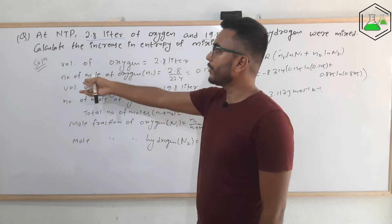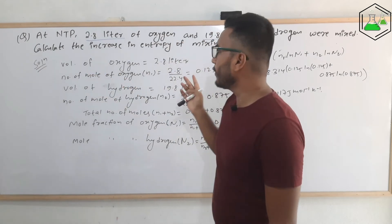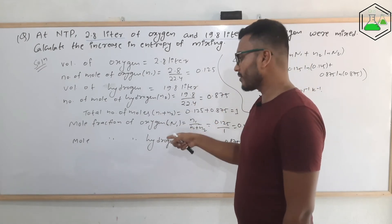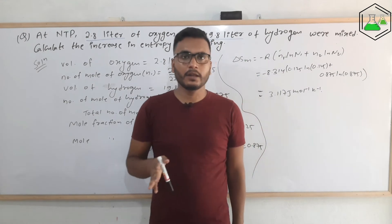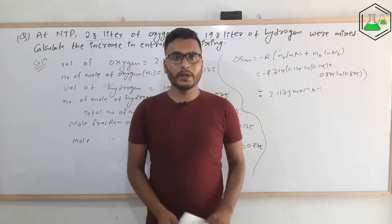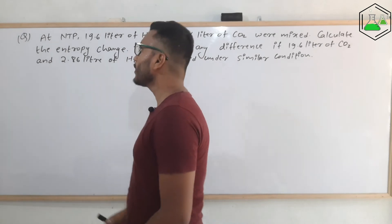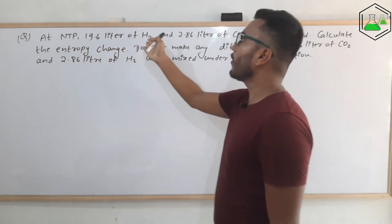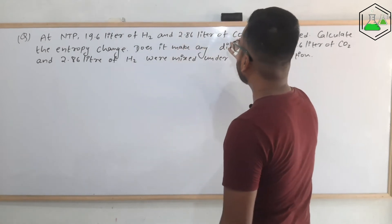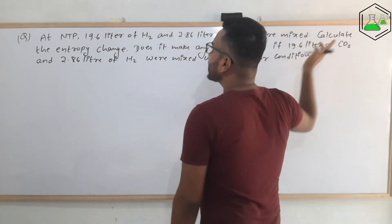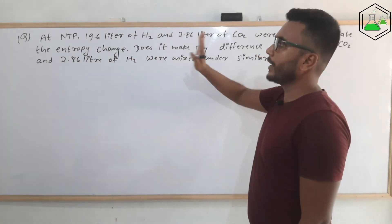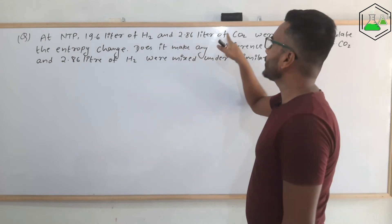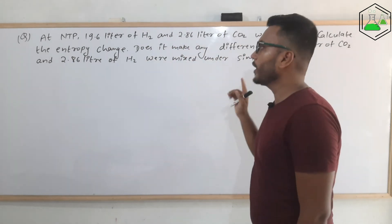When volume is given, first we calculate the number of moles by dividing by 22.4, then calculate the mole fraction, and then we can find the value of entropy of mixing. Now let's see one more important numerical problem. This is the third numerical problem: at NTP, 19.6 liters of hydrogen and 2.86 liters of carbon dioxide were mixed. Calculate the entropy change.